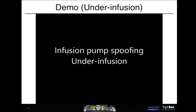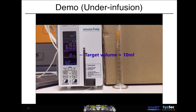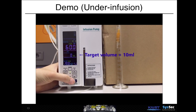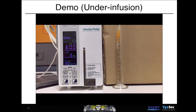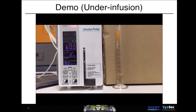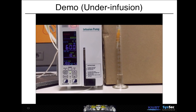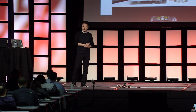For under-infusion, we again set it to 60 milliliters per hour with a target volume of 10 milliliters and run it for 10 minutes. After the infusion completes, the cylinder has only 5.5 milliliters while the monitor shows 10 milliliters — so we under-infused by 45%.